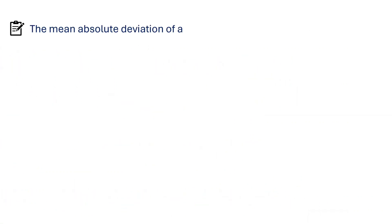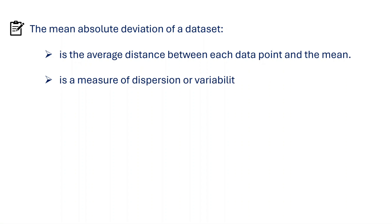The mean absolute deviation of a data set is the average distance between each data point and the mean. It is a measure of dispersion or variability in a data set. It tells us how spread out the data points are from the mean.